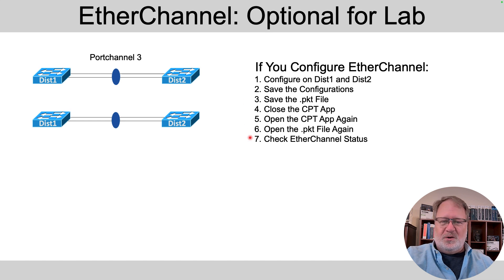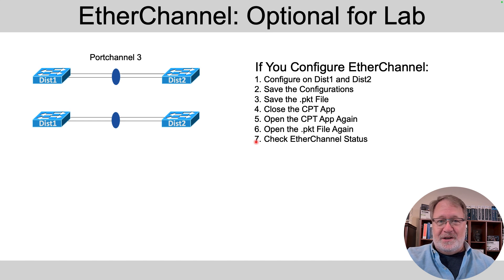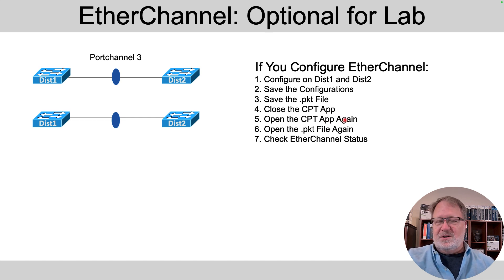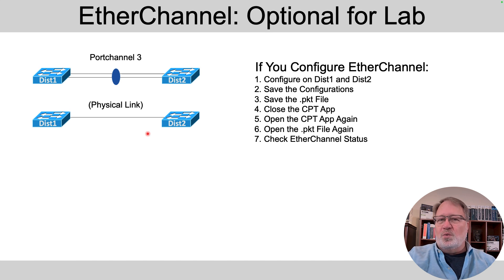If you follow that save-close-reopen process, it usually works. But every time you change the config and want to test it, you'll need to repeat: save config, save the Packet Tracer file, close Packet Tracer, reopen. It's laborious, so you might decide it's not worth it. If you want to skip EtherChannel, instead of using two links between the two distribution switches, shut down the second link with the interface shutdown command and just use one physical link — make sure to turn on trunking on that link, but you don't need a port channel.